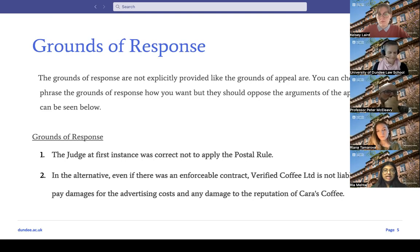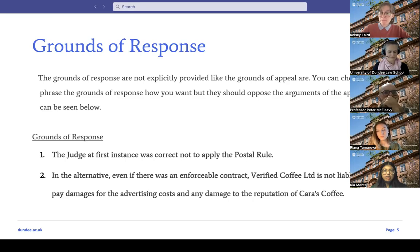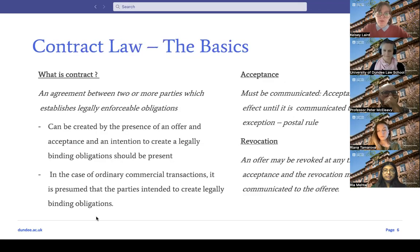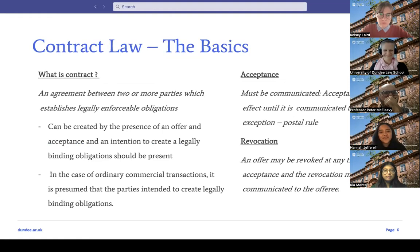The phrase 'in the alternative' is an argument you put forward if the judge doesn't accept your first argument. So if the judge isn't satisfied about your postal rule ground, they'll then consider the ground you're making regarding breach of contract.